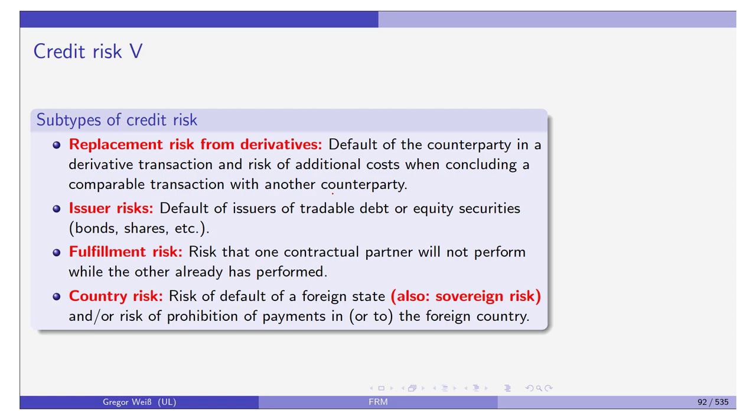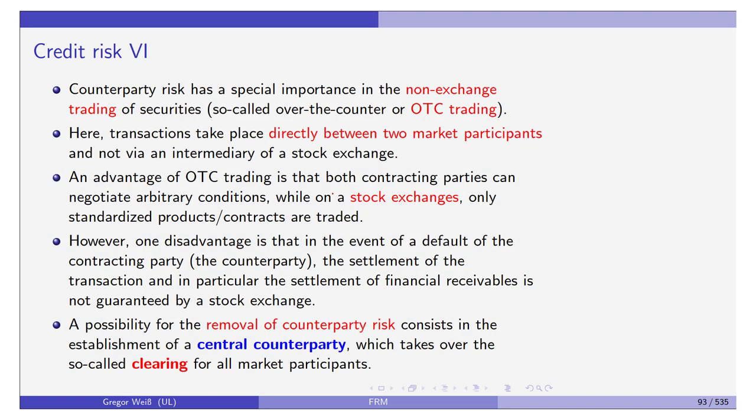There are several subtypes of credit risk: replacement risk from derivatives; issuer risk, where you hold a tradable debt or equity security such as a bond or stock and the issuer defaults; fulfillment risk, where one contractual partner does not perform while the other already has; and country or sovereign risk, if a whole country defaults.